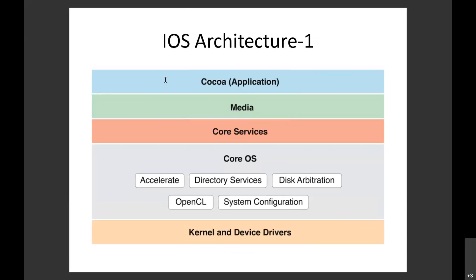The application layer is the touch layer, which consists of the UIKit framework, MapKit, notifications, messages, and all the applications we use. These are part of the Cocoa Touch framework. Below that is the media layer, which refers to audio and video. It consists of frameworks like Core Graphics, iPhone Audio, Media Player, and Core Audio.